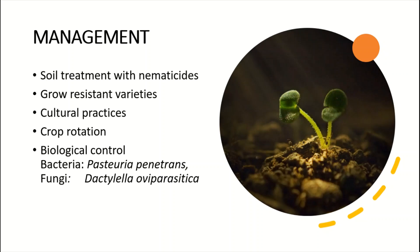How can we manage the root-knot disease in vegetables? Soil treatments with nematicides can be used. Resistant varieties could also be used — for example, in tomato we have resistant varieties carrying the Mi gene. Cultural practices could be used similarly.